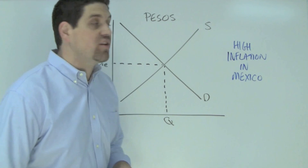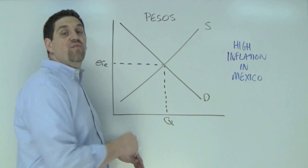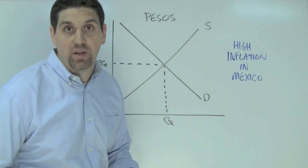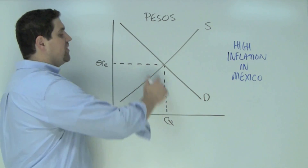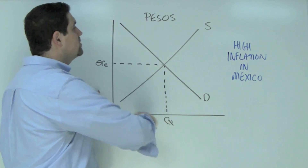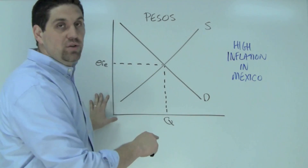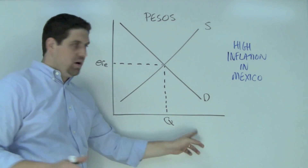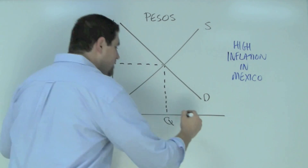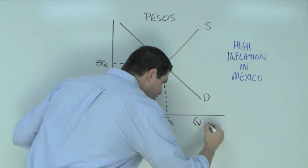In this question it's asking about the foreign exchange market for Mexican pesos. I've drawn the graph to help you out. We've got the demand for pesos and the supply of pesos. What goes down here for quantity? Remember, this is the quantity of pesos.